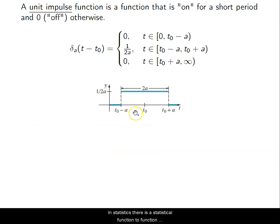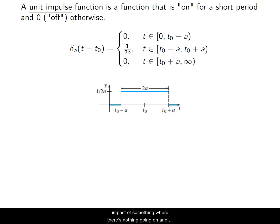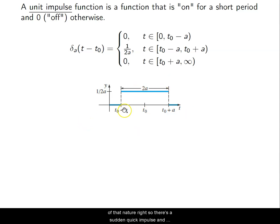In statistics, there's a statistical function very similar to this — the uniform distribution function. This monitors things like a surge of electricity, a sudden impact where there's nothing going on, and then boom, there's a sudden quick impact, and then no more impact again. Examples from the book include hitting a golf ball or getting struck by lightning if you're in an airplane.